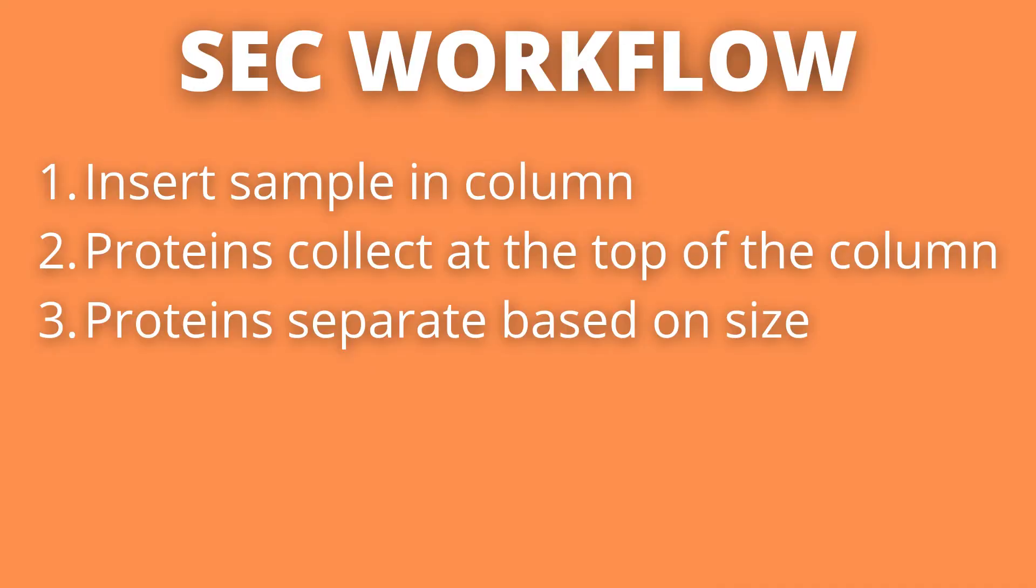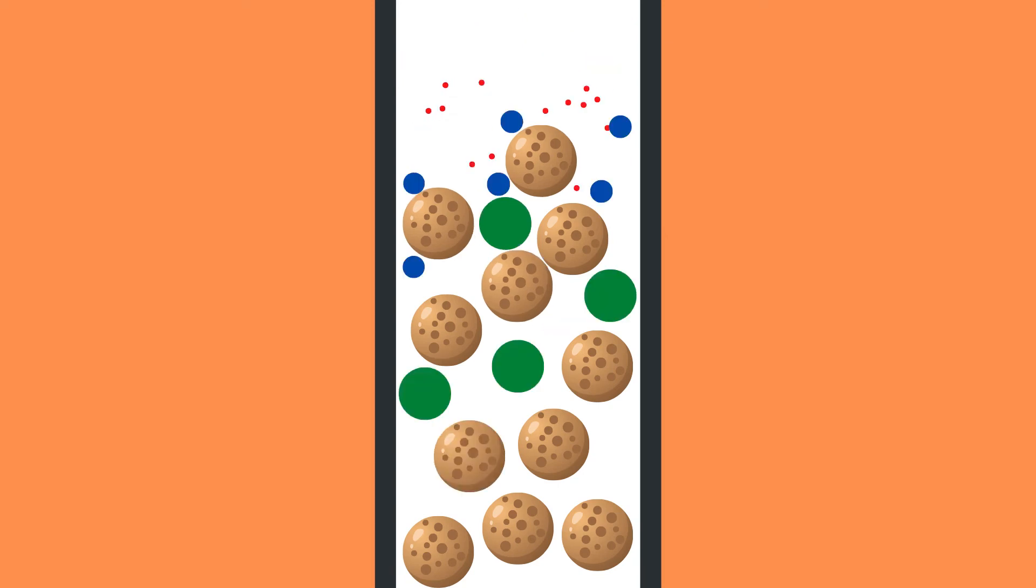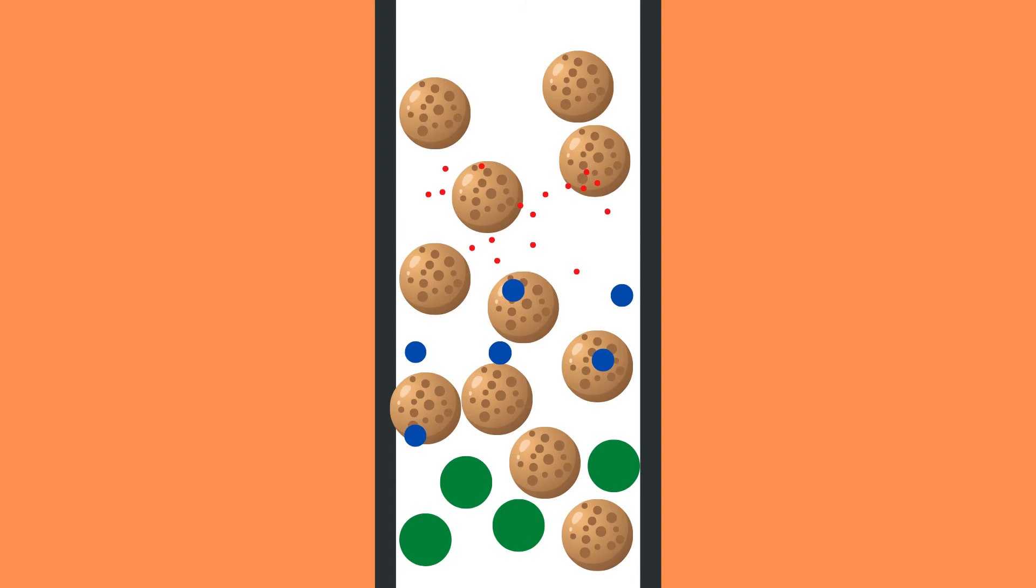Third, with time, larger proteins move quicker through the column while smaller proteins keep getting stuck inside the gel beads, slowing them down.